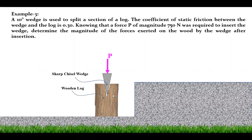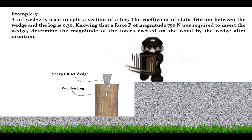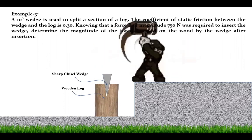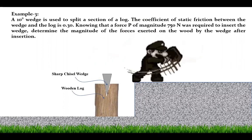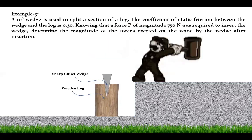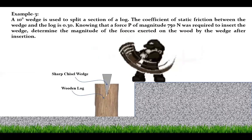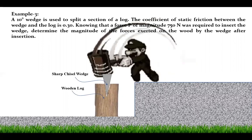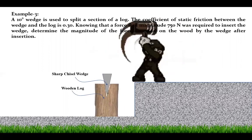Let us visualize how the wooden log will be split using this wedge. Assume a person is hitting this chisel wedge with a hammer. The wooden log has split into two pieces with the help of the hammer. The force applied using the hammer was 750 newtons total. That is how it has been split into two pieces.